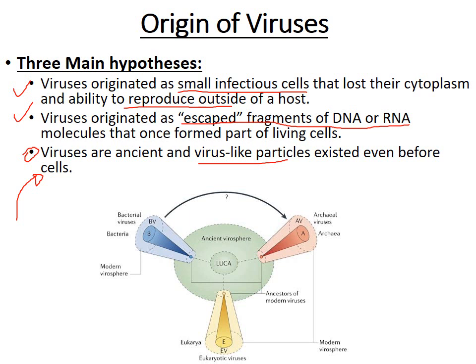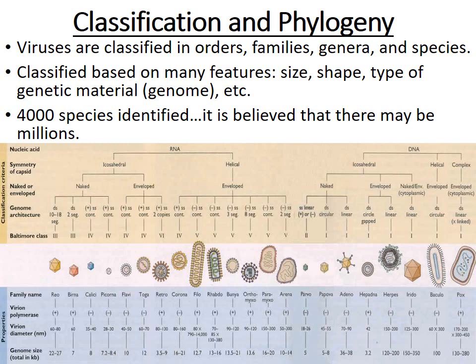Those are the main hypotheses for where viruses come from. You can do independent research to explore other hypotheses as well. Classification does apply to viruses, even though they're non-living. We can classify viruses based on their orders, families, genera, and species, using features like size, shape, and type of genetic material — whether it's DNA or RNA, double-stranded or single-stranded. So far, 4,000 species have been identified, but there may be millions out there not yet named.